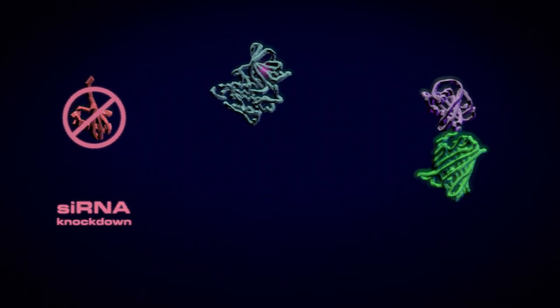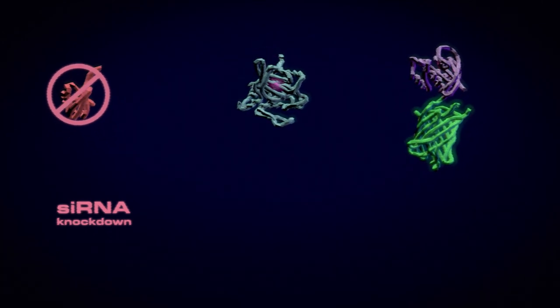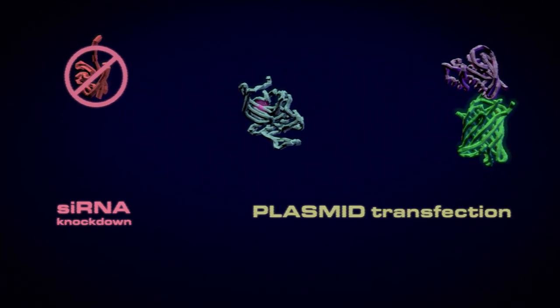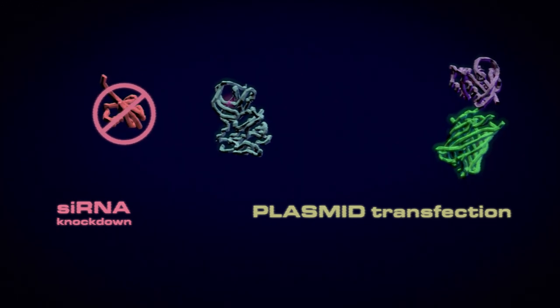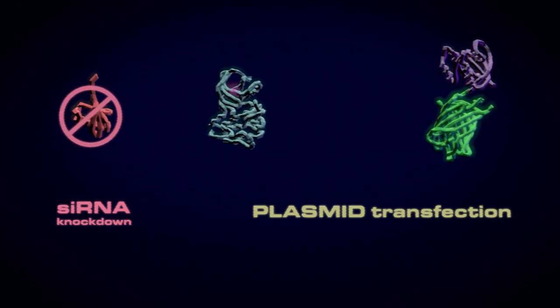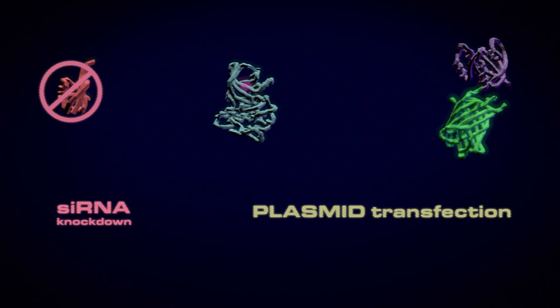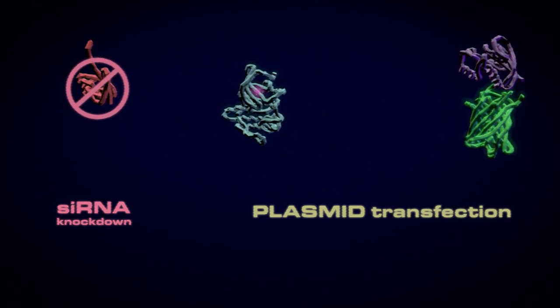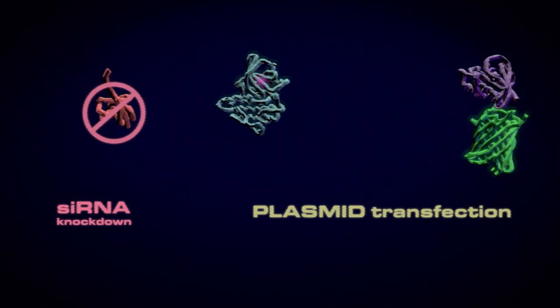You can do this by introducing siRNA into the cells to knock down your protein or transfect the cells with plasmid DNA to express your protein with a mutation or a GFP tag. These methods work just fine and scientists have been using them successfully for decades. But they have some downsides.